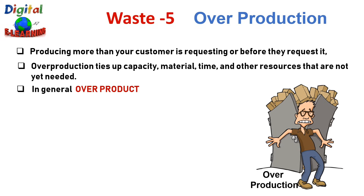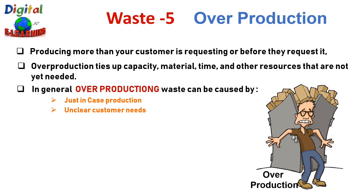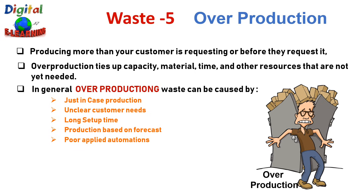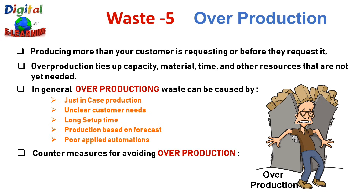Overproduction is a serious type of waste because it leads to excess inventory that often adds to additional cost. In general it is caused by just-in-case production strategy, unclear customer needs, very long setup time, production based on forecast, or poorly applied automation. Countermeasures include just-in-time — ordering only when you need the product — takt time, cycle time and lead time to pace production so the rate of manufacturing matches customer demand, and SMED to reduce setup time for smaller, economical batches.